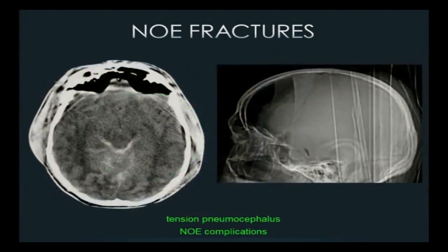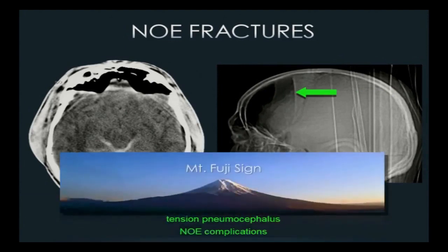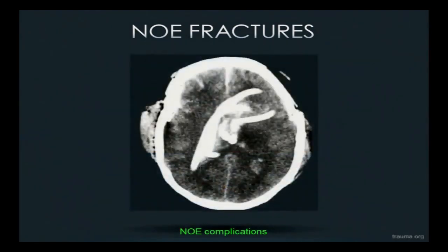One complication is breaking the cribriform plate. If patients are bagged at the scene, air can enter the cranial vault and cause tension pneumocephalus — you've got a fixed volume, and introducing air quickly creates mass effect. We see this on CT as air at the top of the ventricles and an air-CSF level, referred to as the Mount Fuji sign. Also, if a new resident passes an NG tube with the cribriform plate broken and keeps going until they meet resistance, they may end up with the tube in the brain.